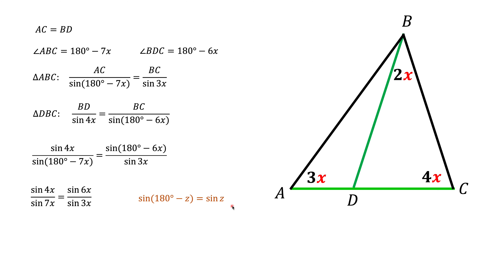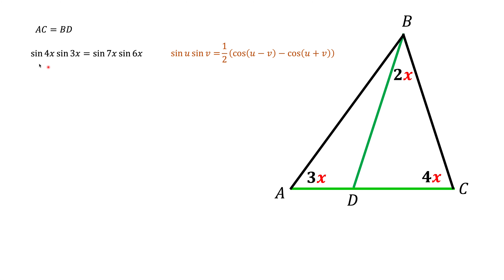Applying that formula gives us a simplified expression. The next step is to multiply through by both denominators to clear them. We're left with a product of sines on the left and a product of sines on the right, so it's natural to apply the product-of-sines formula to both sides separately.